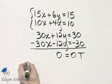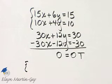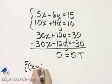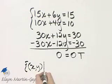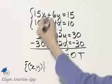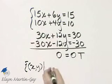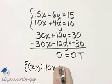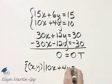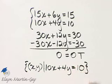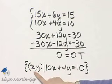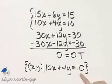So how can we write down the infinite number of solutions? We can say this is the set of all ordered pairs (x, y) such that, then simply choose an equation. I'll choose the second equation, such that 10x plus 4y is equal to 10. Any ordered pair that is an ordered pair solution of this equation is an ordered pair solution of the system.